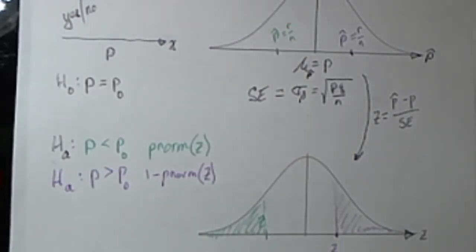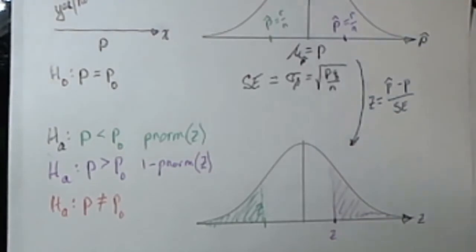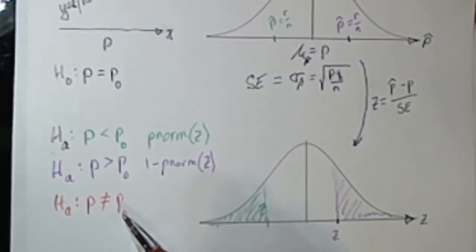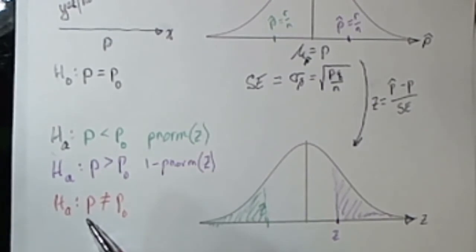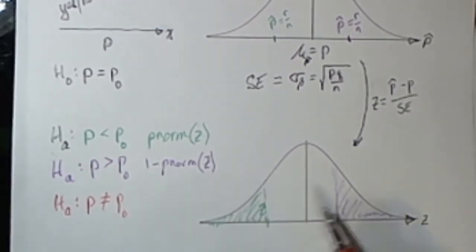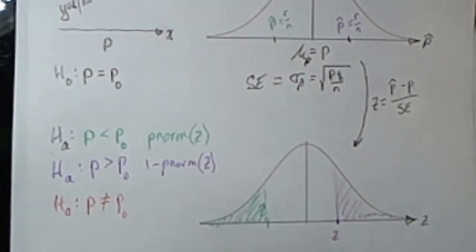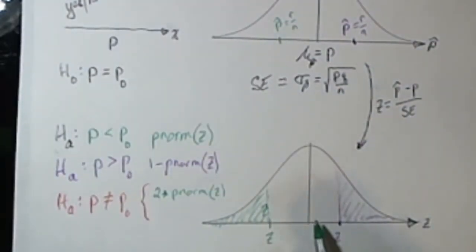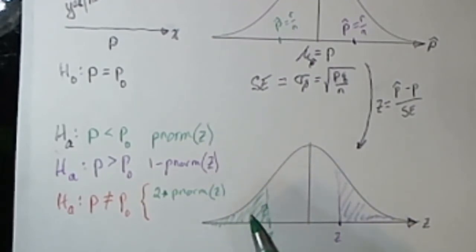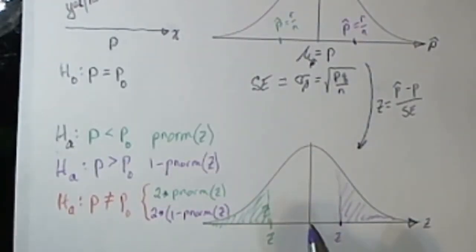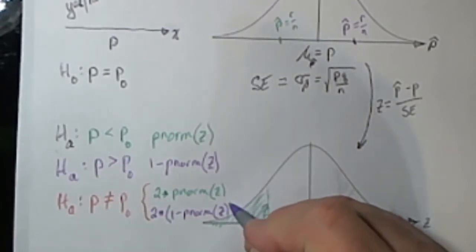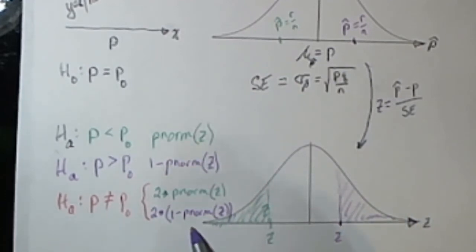The final case is when the alternative hypothesis is claiming that p is simply different — not equal to — the value given in the null hypothesis. In that case, our p-hat might end up in either place. Calculating the p-value will depend on which tail the test statistic turns up in. If the test statistic ended up below zero — that is, if z is negative — then we'll take two times that area to get both tails. In the case that the test statistic is positive, then we'll take two times this area, so two times one minus pnorm of z.